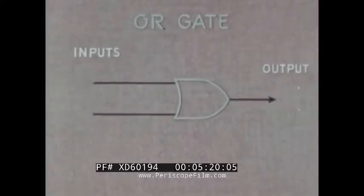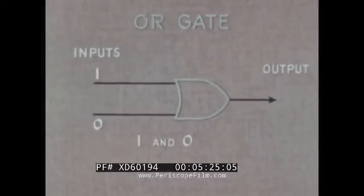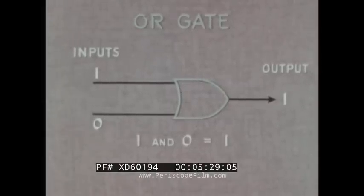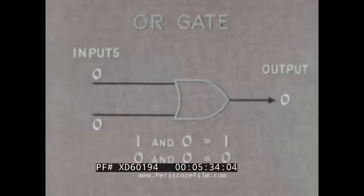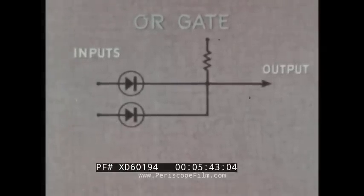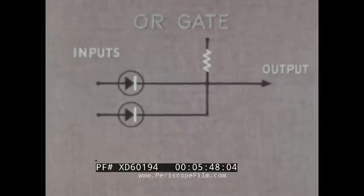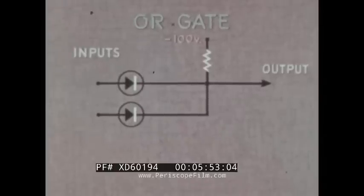The function of the OR gate is to act as a mixer or buffer. When there is a binary one on at least one of the inputs, the gate permits a binary one output. Zero inputs mean a zero output. The OR circuit, like that of the AND gate, is composed of two or more diodes and a resistor. Here, however, the cathodes are connected to the resistor and it is returned to a negative voltage, say minus 100 volts.